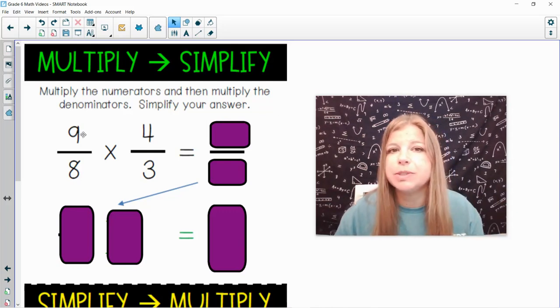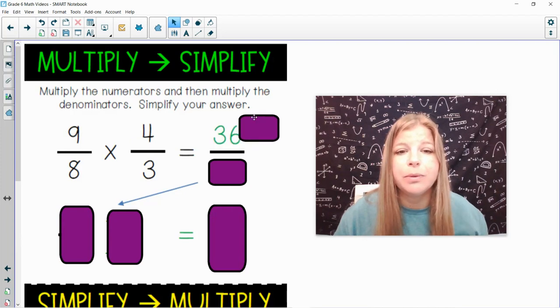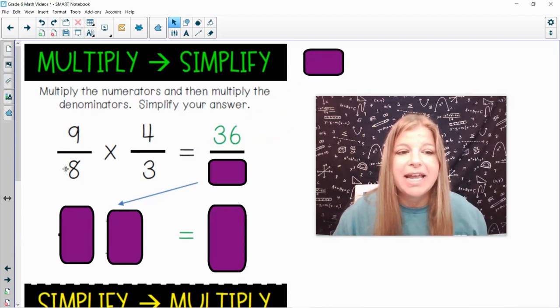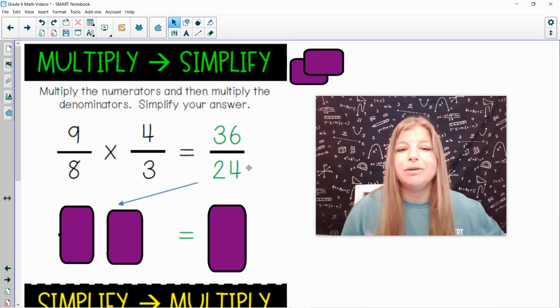So in this first problem, 9 eighths times 4 thirds, I simply multiply straight across. 9 times 4 is 36. 8 times 3 is 24. All you do to multiply fractions is you multiply numerator to numerator. 9 times 4 is 36. 8 times 3 is 24. And look, I have a brand new fraction.